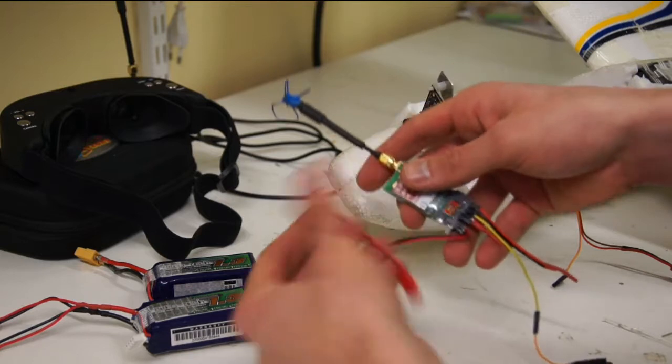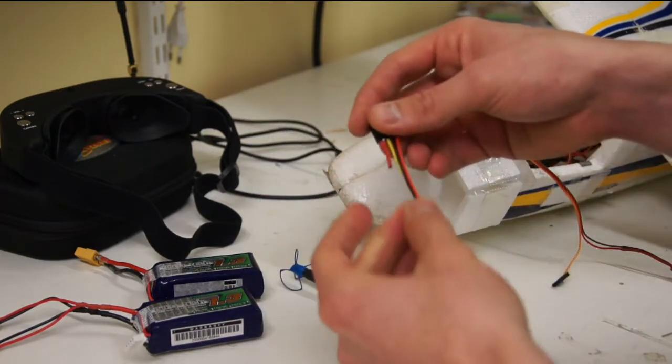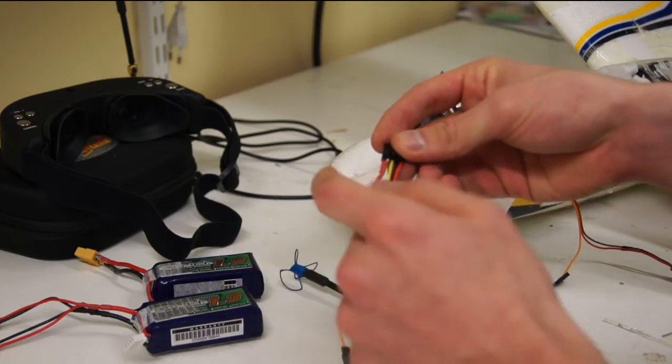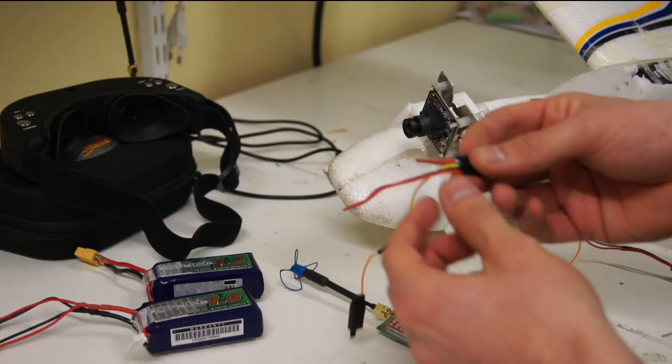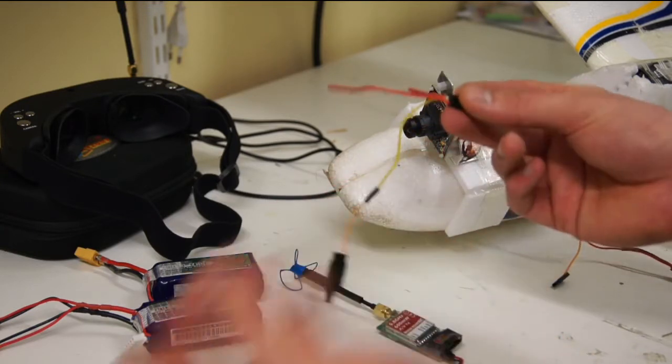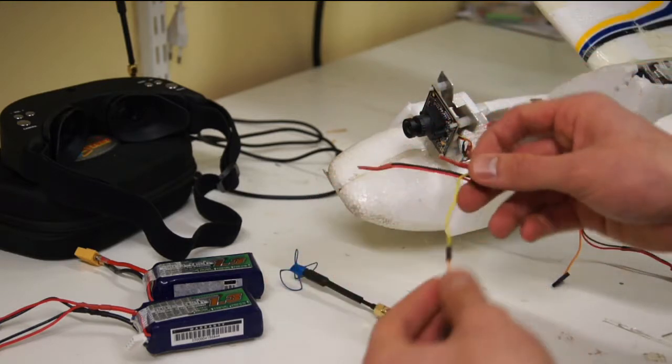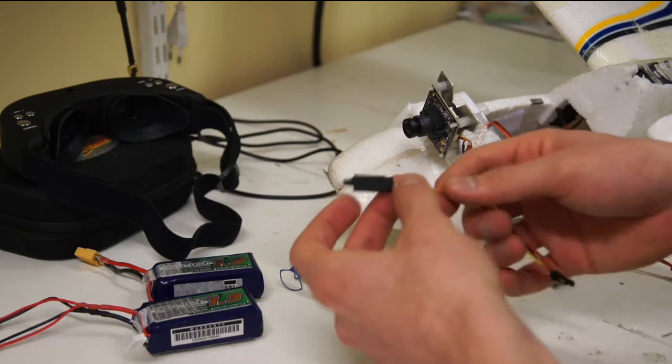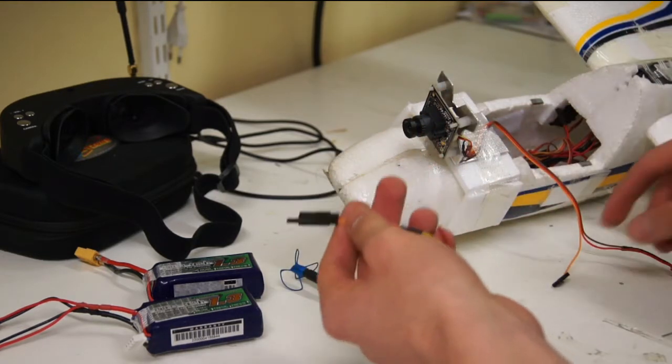So what I did was I took this cable right here and I just let the white and the green wire float because I'm not using audio. And the black and the red wire is just the 5-volt output, so I'm not going to use that since I can't power the camera with it. So all I did was take the yellow wire and connect it to a servo connector.